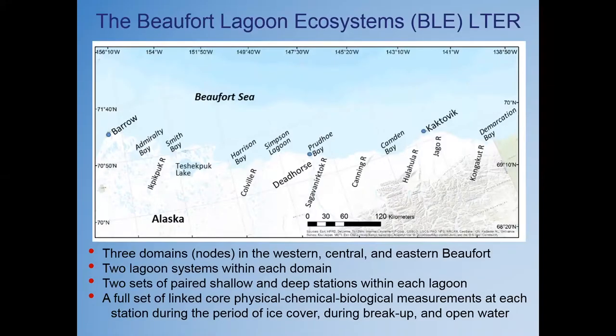The big 40,000-foot view: in terms of the Beaufort Lagoon ecosystem's location of sites, stations, and domains, we have three domains — western, central, and eastern Beaufort. Barrow is in the western Beaufort, toward Prudhoe in the central Beaufort, and the eastern Beaufort is centered by Barter Island at the village of Kaktovik. There are two lagoon systems located within each domain, with two pairs of shallow and deep stations within each lagoon. At each station, we're performing a full set of linked core physical, chemical, and biological measurements during the period of ice cover in April, during breakup in late May and June, and during the open water season.